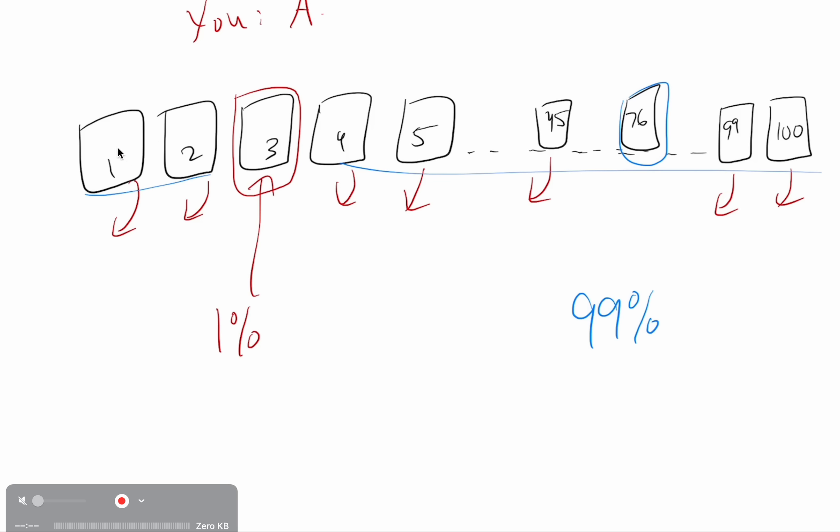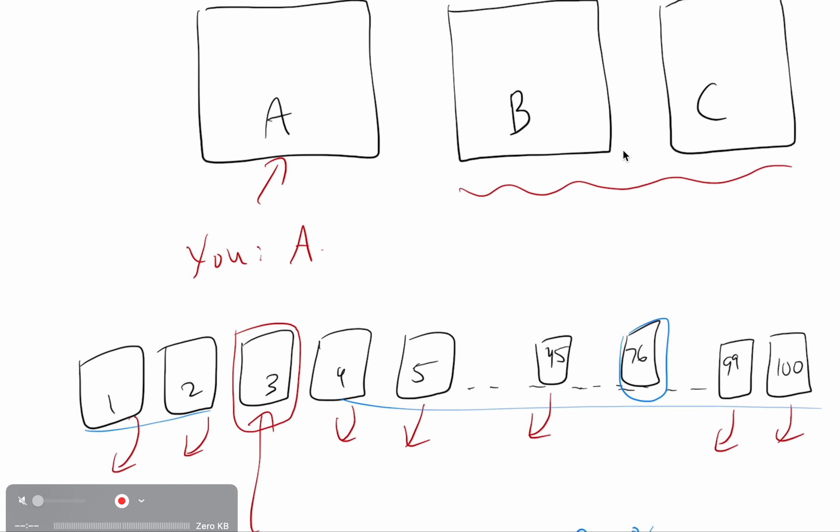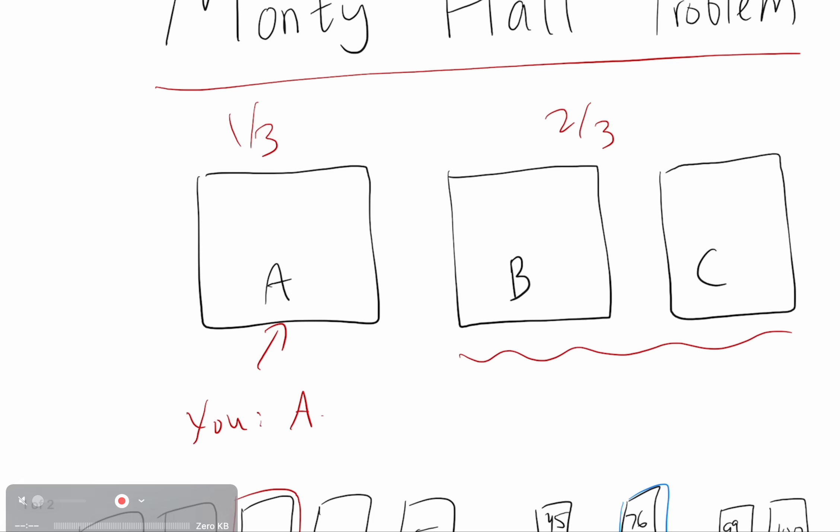But a 99% possibility is that the prize was behind any one of the other 99 doors, and after you made your pick, the game show host opened all but one of those other ones, and so there's a 99% chance that it's behind door 76, again, because the game show host is using information, and that's how you can think about the Monty Hall problem.